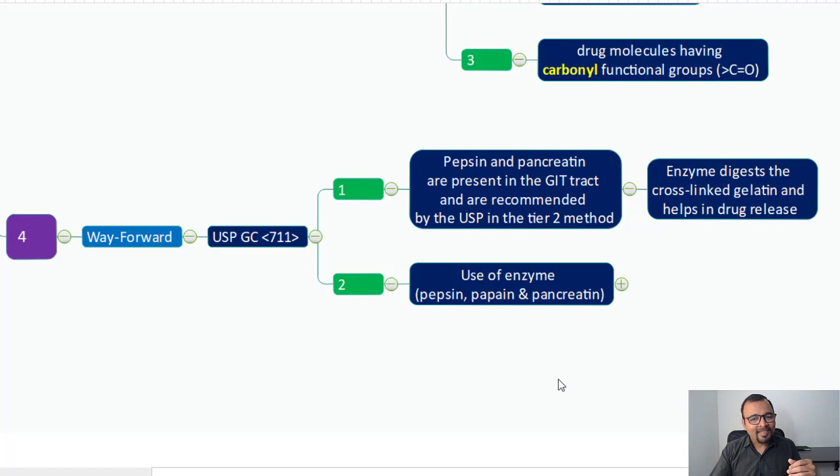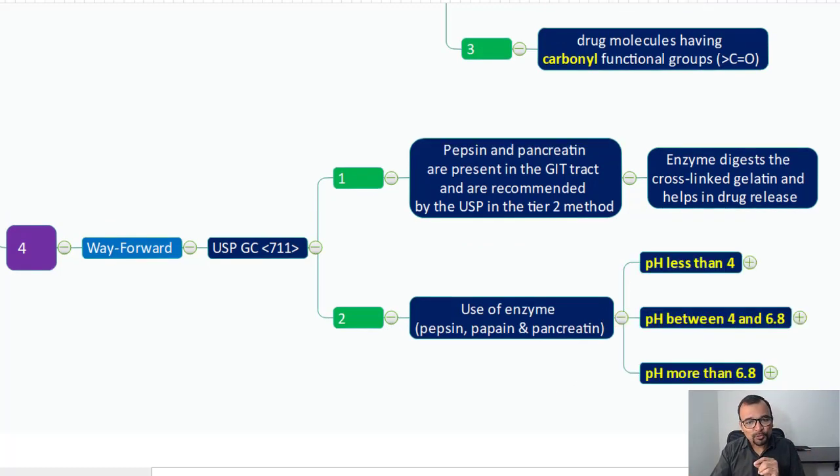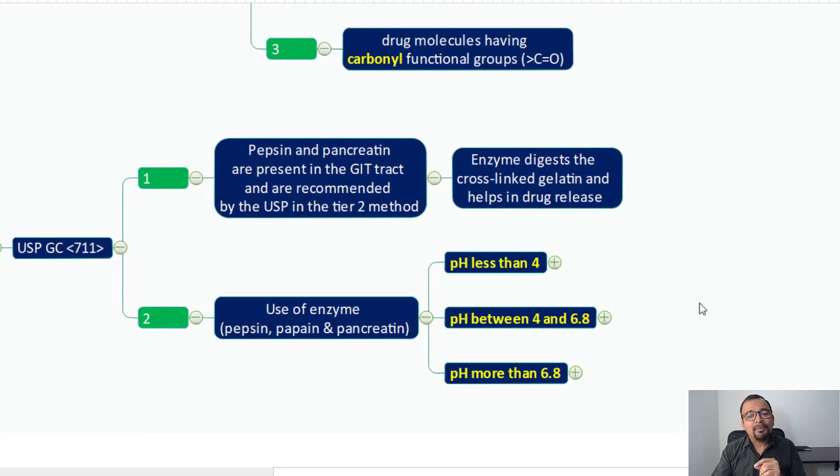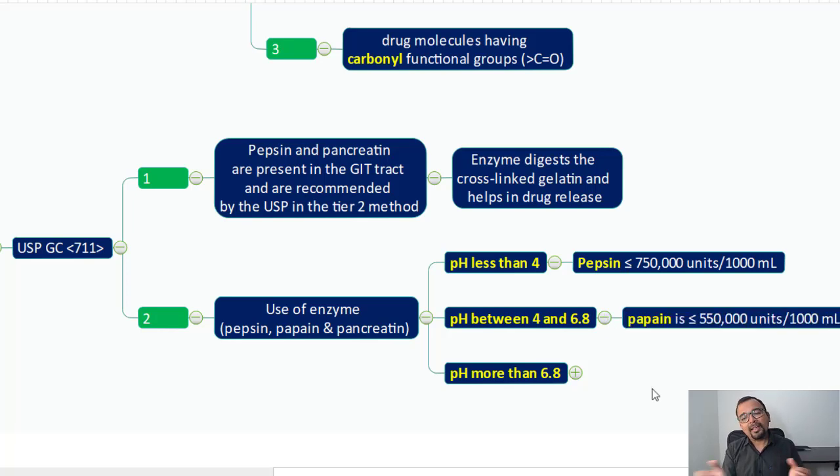These are the enzymes now. Pepsin, papain, and pancreatin can be used. If the dissolution medium pH is less than 4, then you can use pepsin with concentration equal to or less than 750,000 units per 1000 ml. If your dissolution pH is between 4 and 6.8, then papain with concentration less than or equal to 550,000 units per 1000 ml is proposed. If the pH of dissolution medium is more than 6.8, then pancreatin of concentration equal to or less than 2000 units per 1000 ml is proposed.